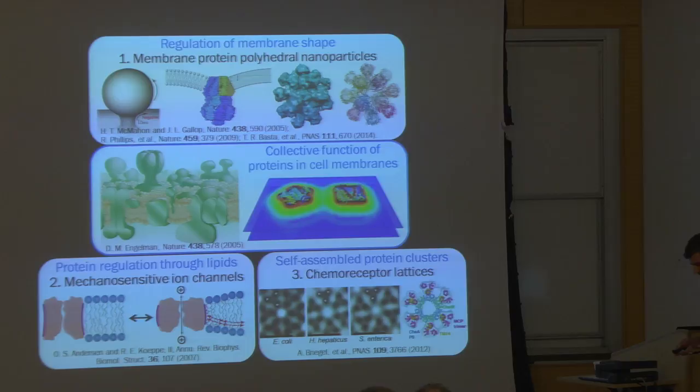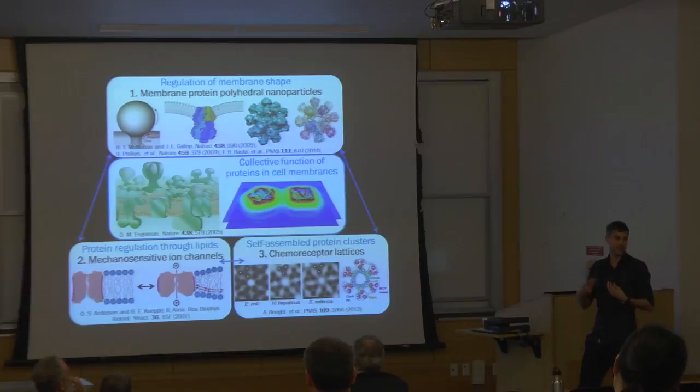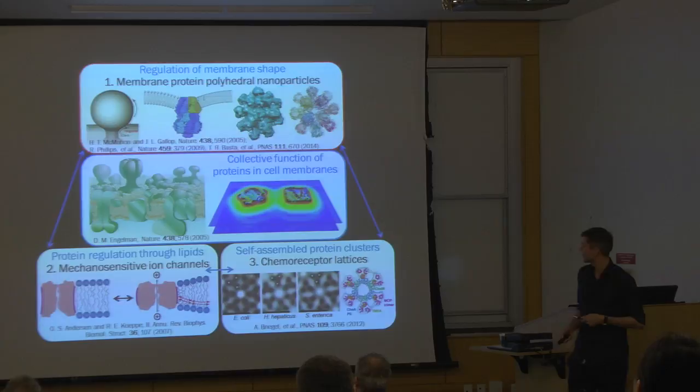I should emphasize that all of these aspects of collective membrane function are very much interrelated. In general, to generate different types of non-trivial curvature, one needs ordering of membrane proteins. Similarly, the ordering of membrane proteins can be very sensitive to membrane shape and geometry. There's really an interplay between all of these different effects. So first of all, let's think about membrane protein polyhedral nanoparticles.